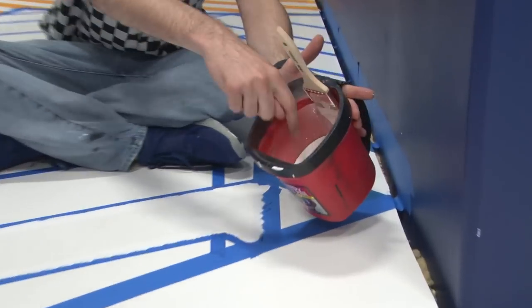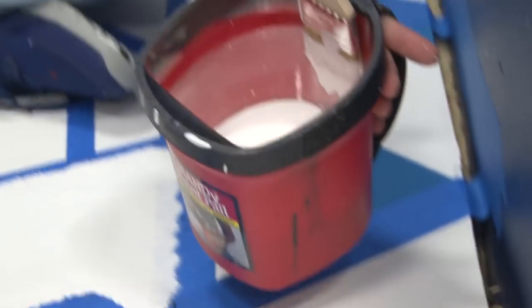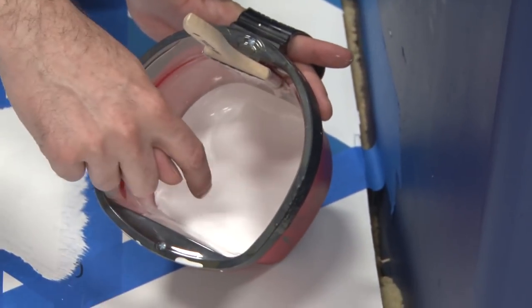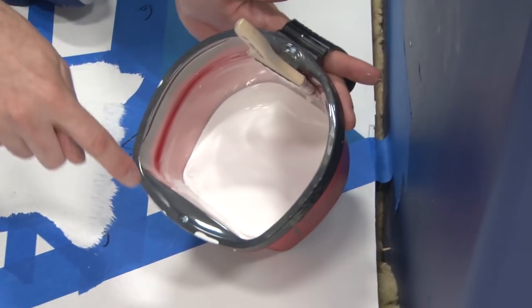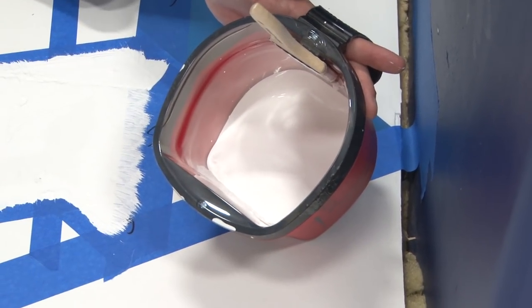See how the inside of my bucket looks? There's a little bit of paint here. There's a little bit of paint here. And that's it. Down here and up there. That's it. There's no paint around the rim. There never should be. This is what your bucket should look like as you go.